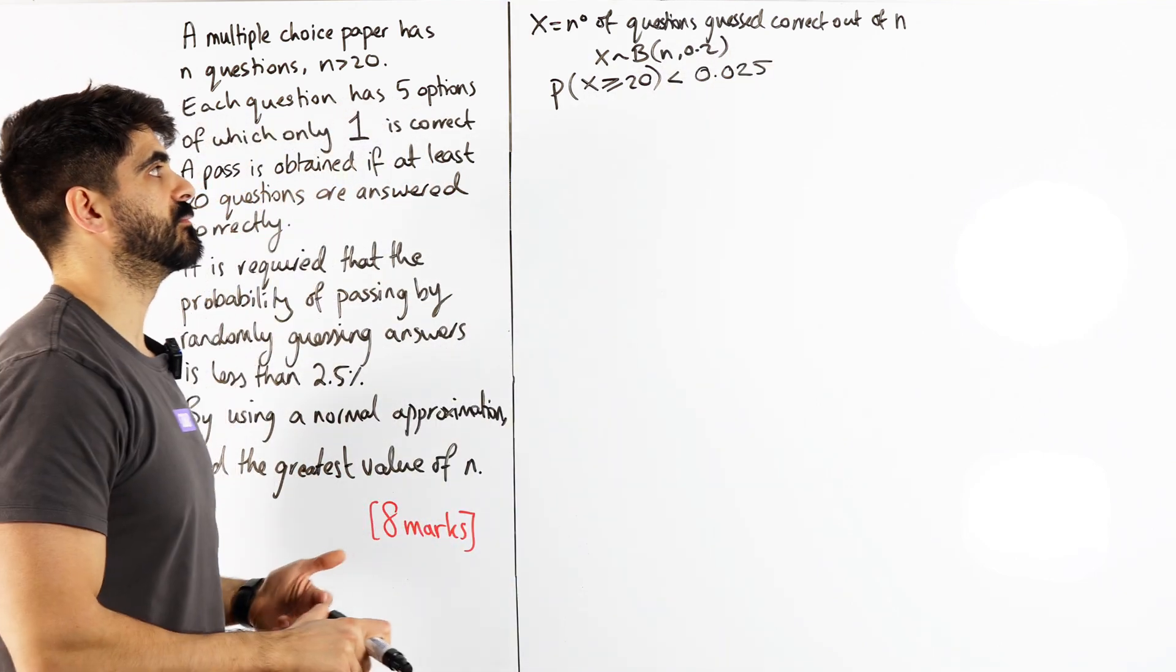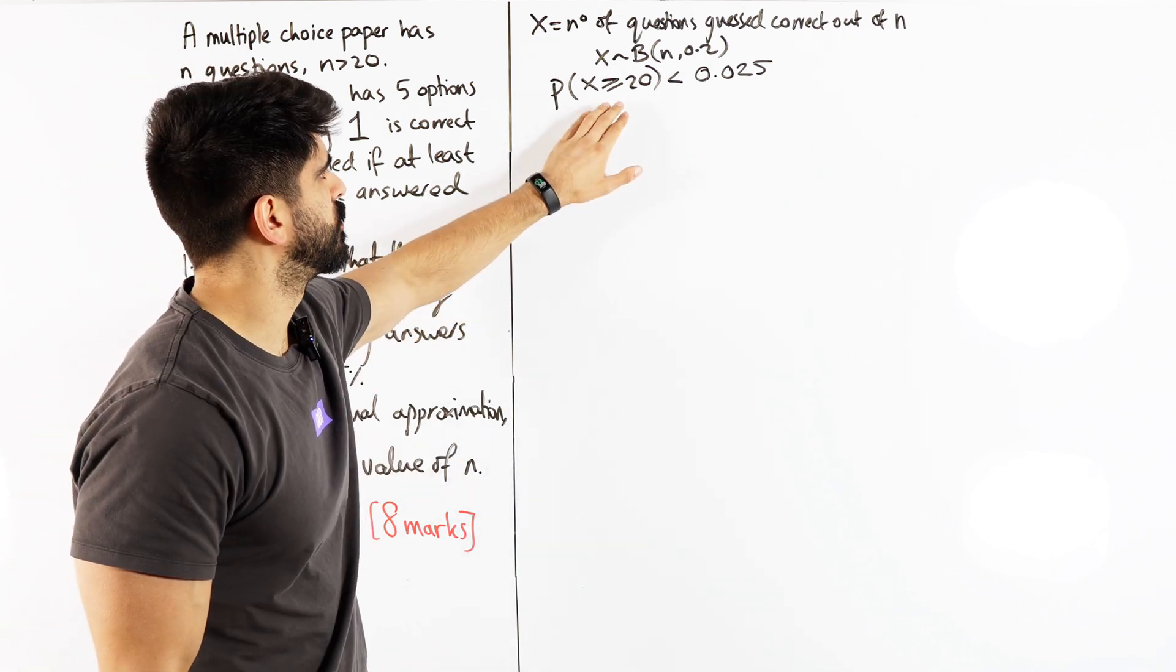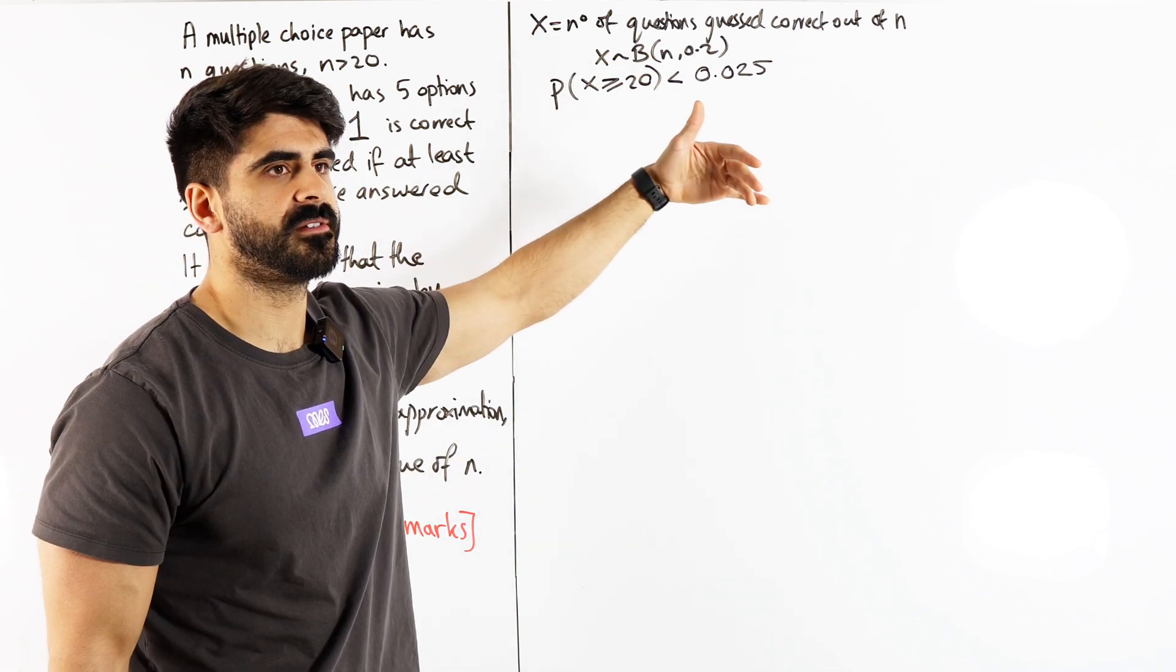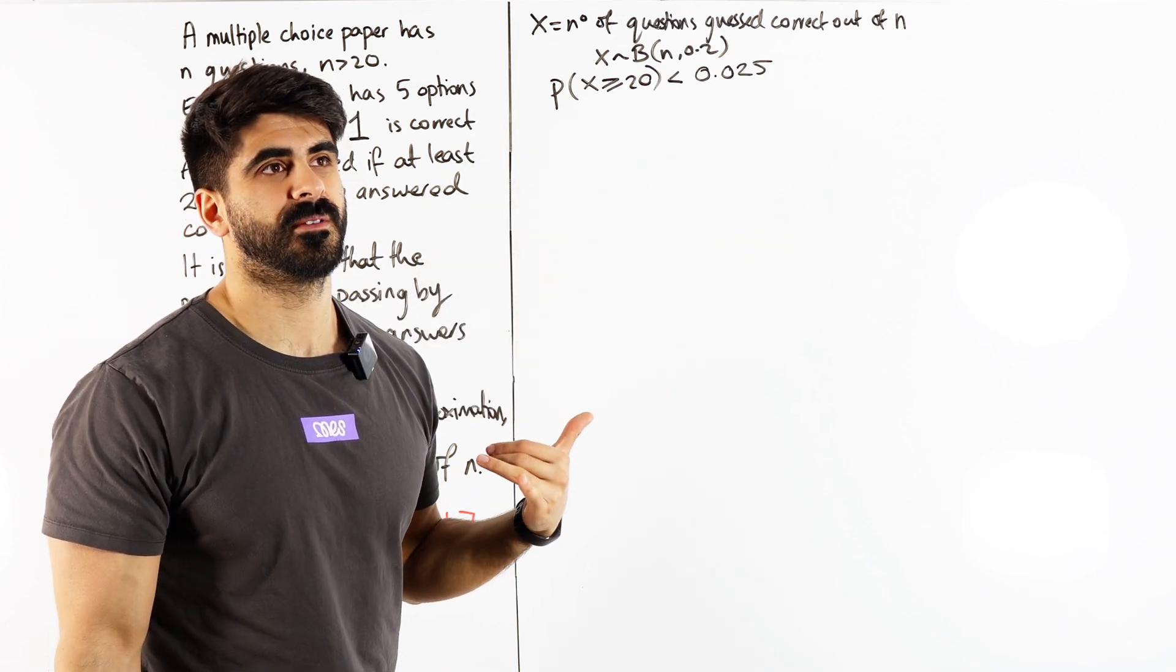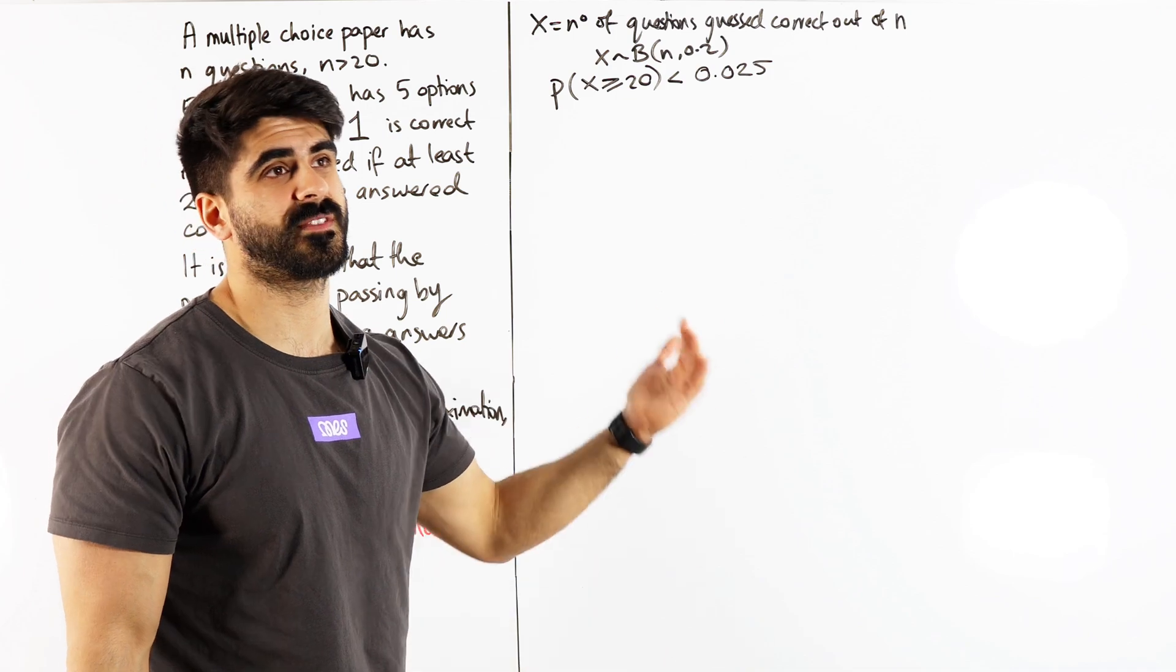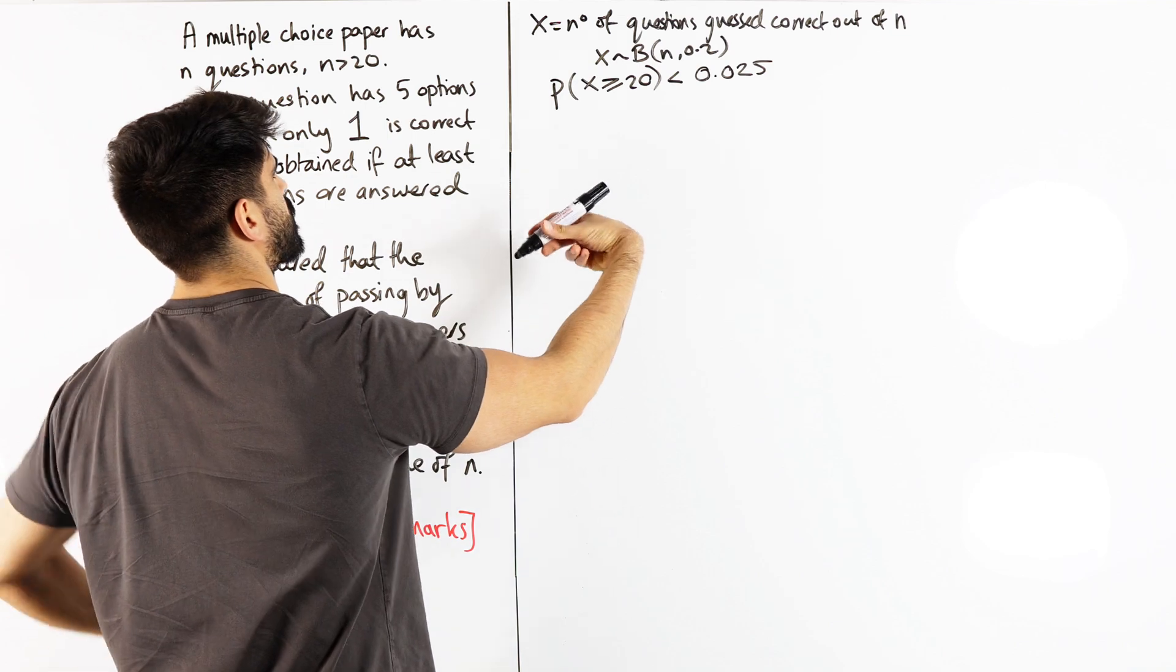Now from there we can move on to the normal distribution. I mean you could work with the binomial but it's hella long because you have to work out the probability of 20 up to n which you can't actually do anyway. You have to do less than 20. 1 minus less than equal to 19 then you have to add the probabilities from 0 to 19. You're just not doing that. Which is why we're doing a normal approximation.